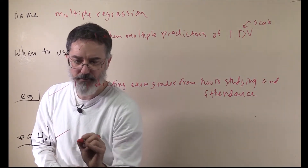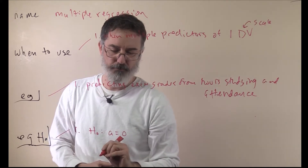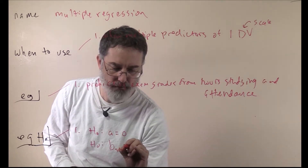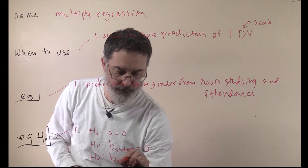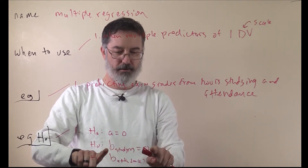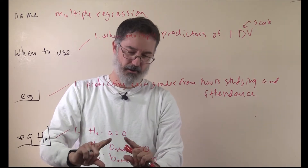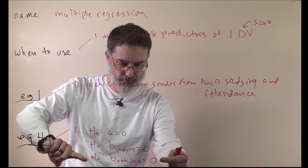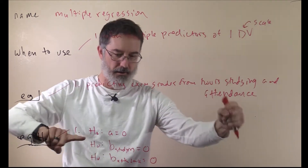The null hypotheses here would be: one for the intercept — A equals zero — then another null hypothesis that the slope for studying is zero, and a null hypothesis that the slope for attendance is zero. All this would mean is that there is no correlation between hours studying and exam grades, controlling for attendance. Similarly, the null hypothesis for attendance is that the slope is zero for attendance and exam grades when controlling for studying.